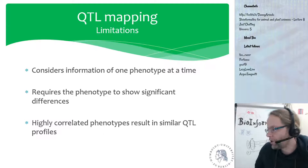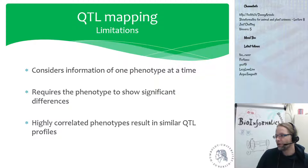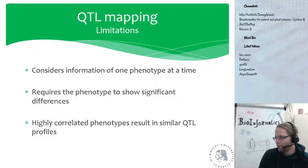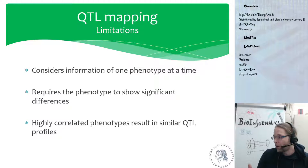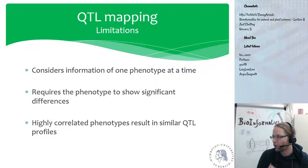QTL mapping comes with some severe limitations. One of the main things is that it only considers a single phenotype at a time — at each marker we split into two or three groups and look for a difference in the mean of this single phenotype. Another limitation is that the phenotype needs to show significant differences. If a phenotype doesn't vary much — for example, the number of arms of a human where almost everyone has two arms — it's very hard to find the genetic location involved. If there's no variation, you cannot associate it with a location in the genome.